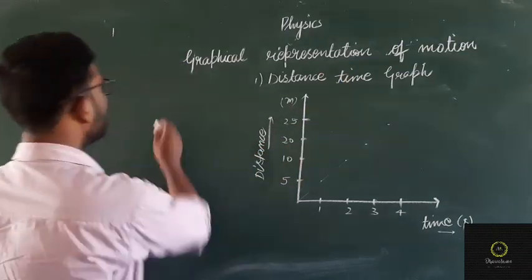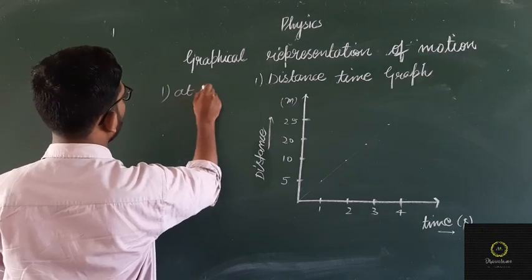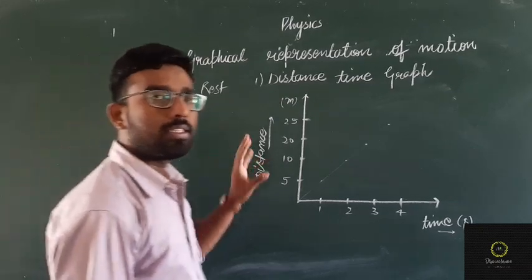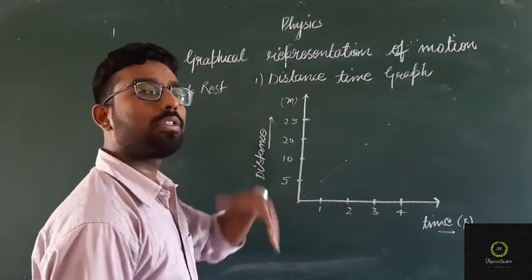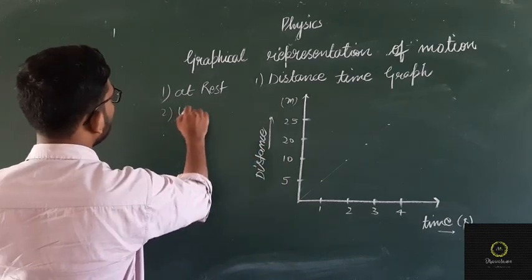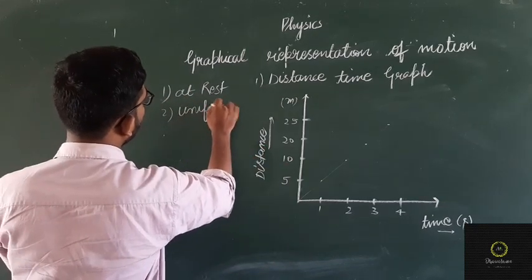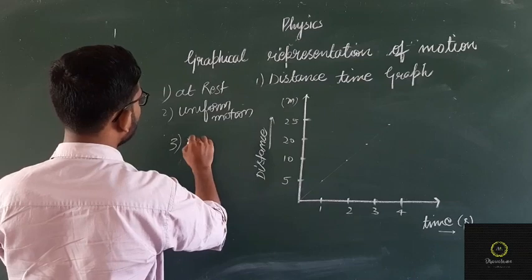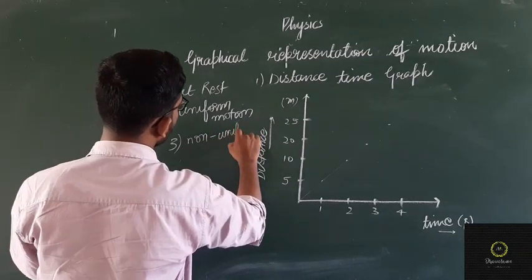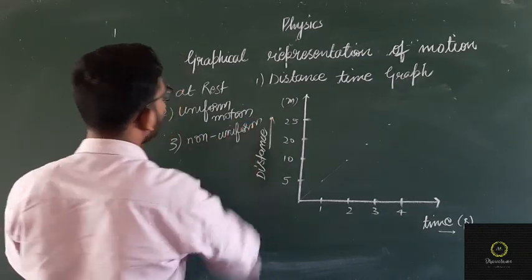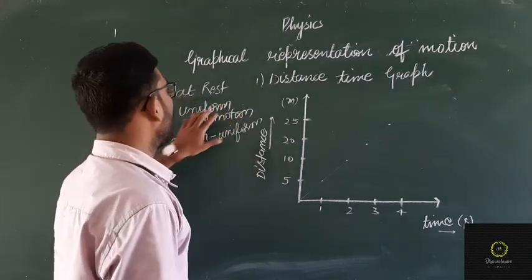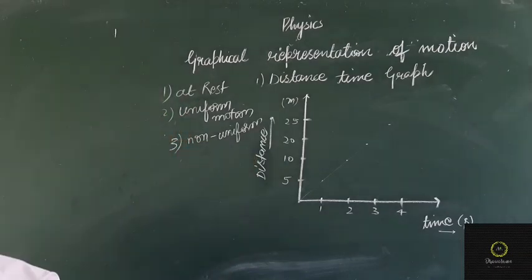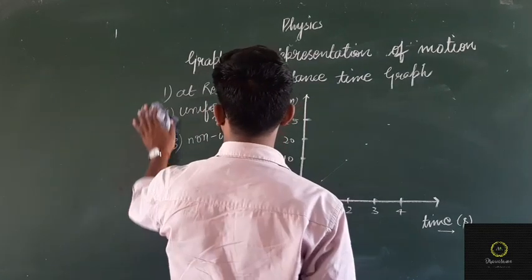The three cases are: first, the body at rest — how the body can be stationary, not moving; second, uniform motion; and third, non-uniform motion. So we will study: at rest position, uniform motion, and non-uniform motion.